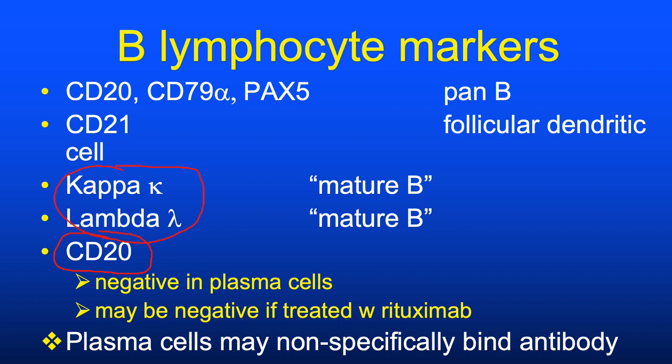Plasma cells are chock full of immunoglobulin—the same protein used as the primary and secondary antibody in immunoperoxidase stains—so if you see nonspecific staining in cells that morphologically look like plasma cells, it's probably nonspecific.